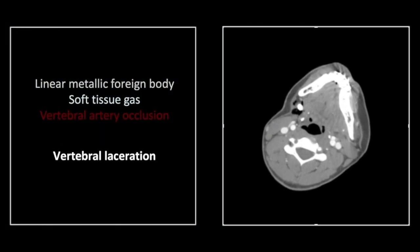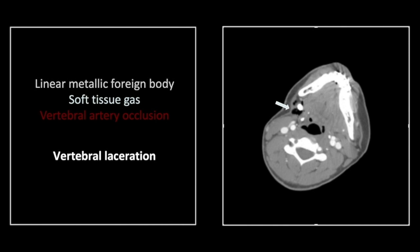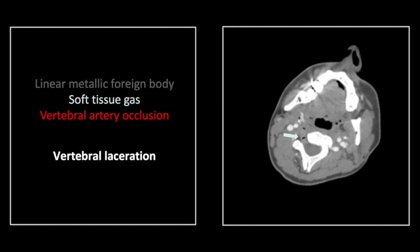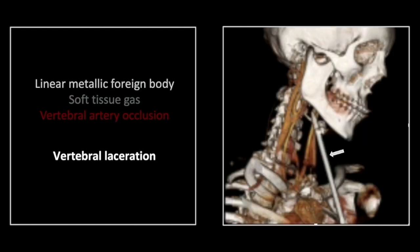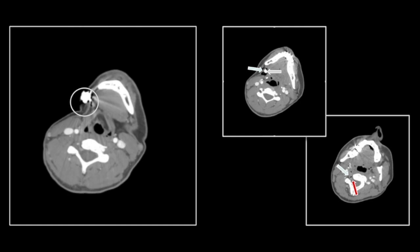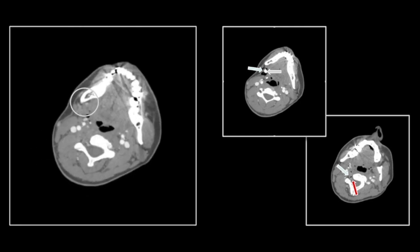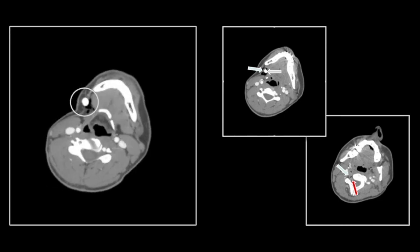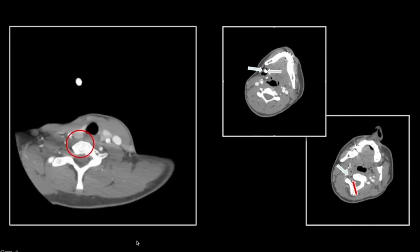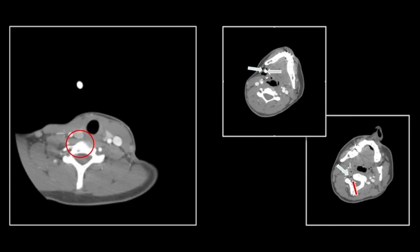Our next case is a vertebral artery laceration. You can see there is a metallic foreign body — this was actually an archery mishap, so that is an arrow. There is adjacent soft tissue gas, and most importantly, there is no contrast enhancement of the right vertebral artery. Here is the offending arrow. They were wise enough not to remove it completely, but its presence, partially within the soft tissues, is misleading because it suggests to the viewer that the arrow did not penetrate as deeply as it actually did. You can follow that right vertebral artery and see you lose it quite quickly.